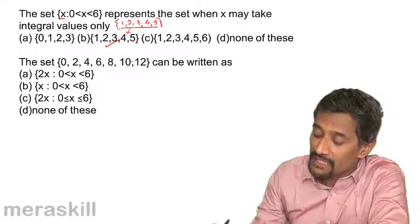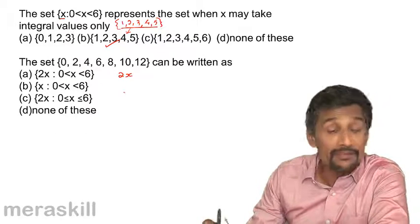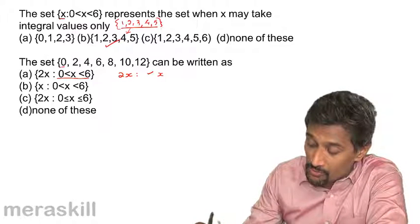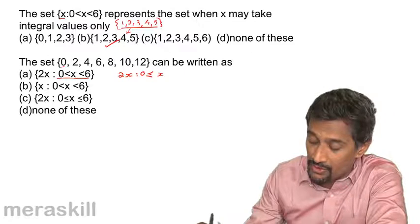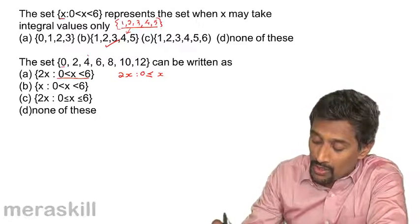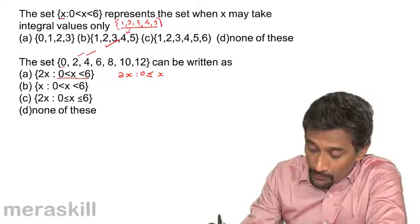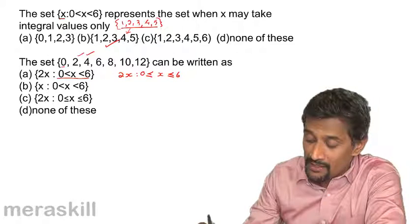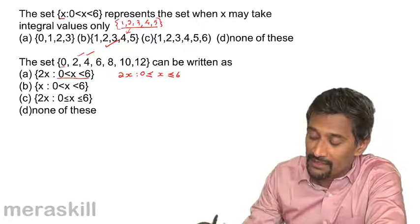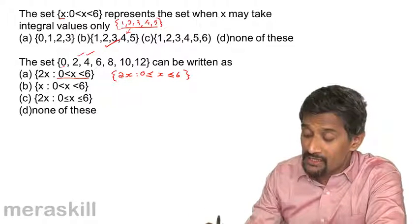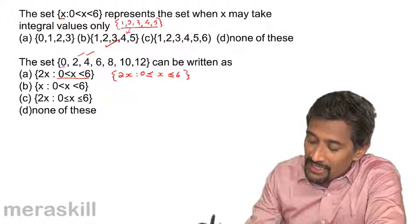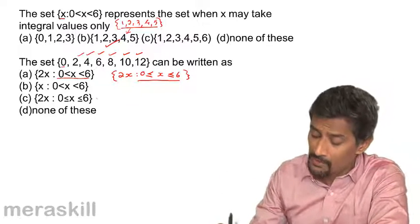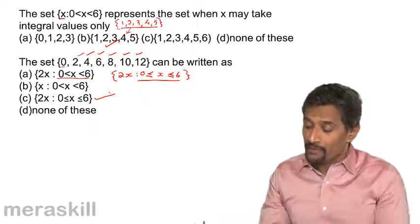The set {0, 2, 4, 6, 8, 10, 12} can be written in set-builder form. Each element is an even number and can be written as 2X. Since the set starts at 0, X must be greater than or equal to 0. Taking X from 0 to 6: 2×0 = 0, 2×1 = 2, up to 2×6 = 12. So this is the set of all 2X such that X is greater than or equal to 0 and less than or equal to 6.